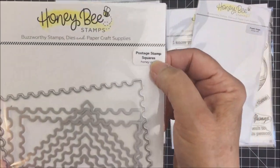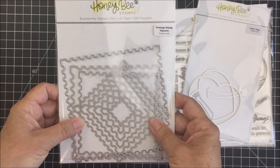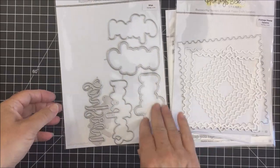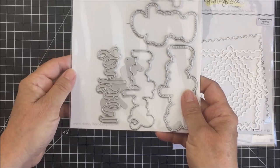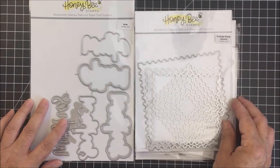I'm going to use the Postage Stamp Squares dies for the front panel of my card today. I'm going to be using that size that I'm showing you there, which is a four by four square. I also wanted to use the Wish sentiment from the Wish Honey Cut set, and that is going to create the sentiment for the front of my card.